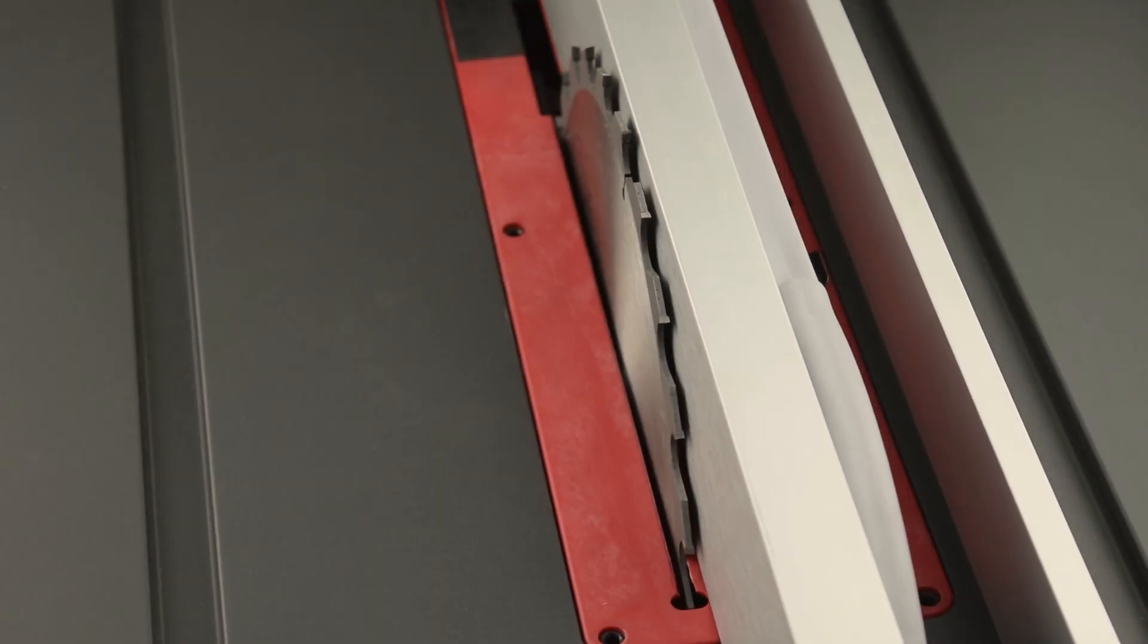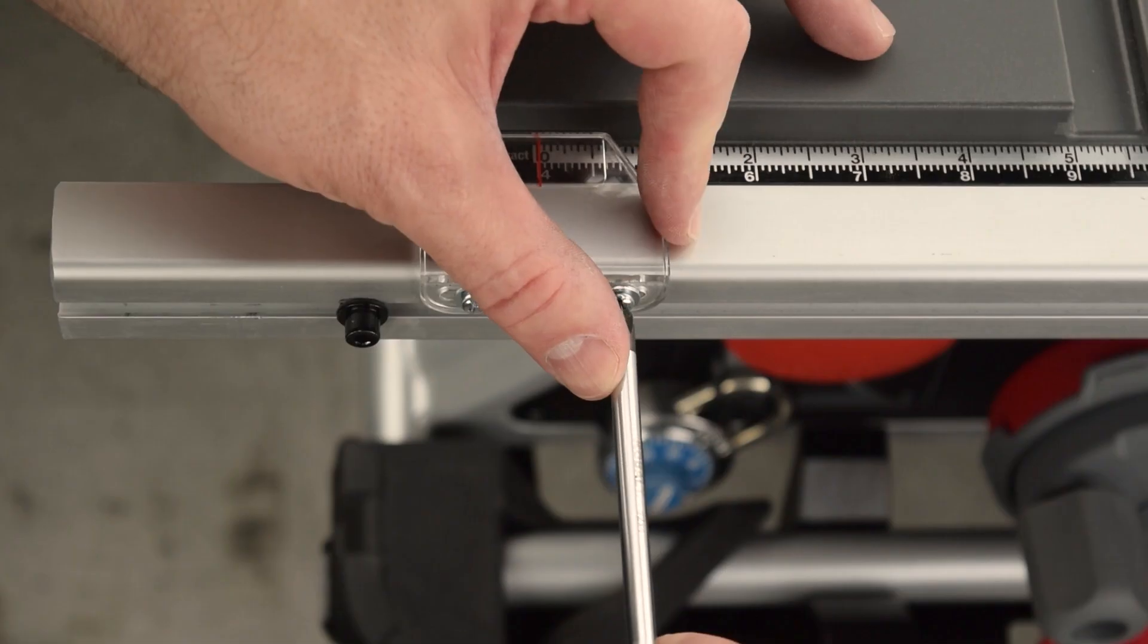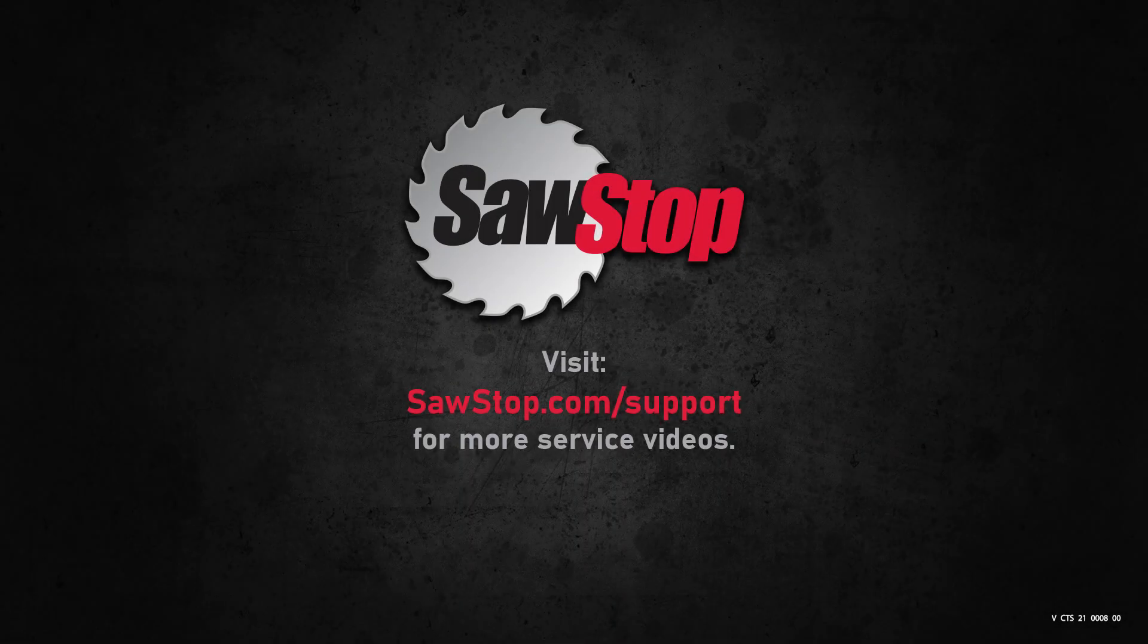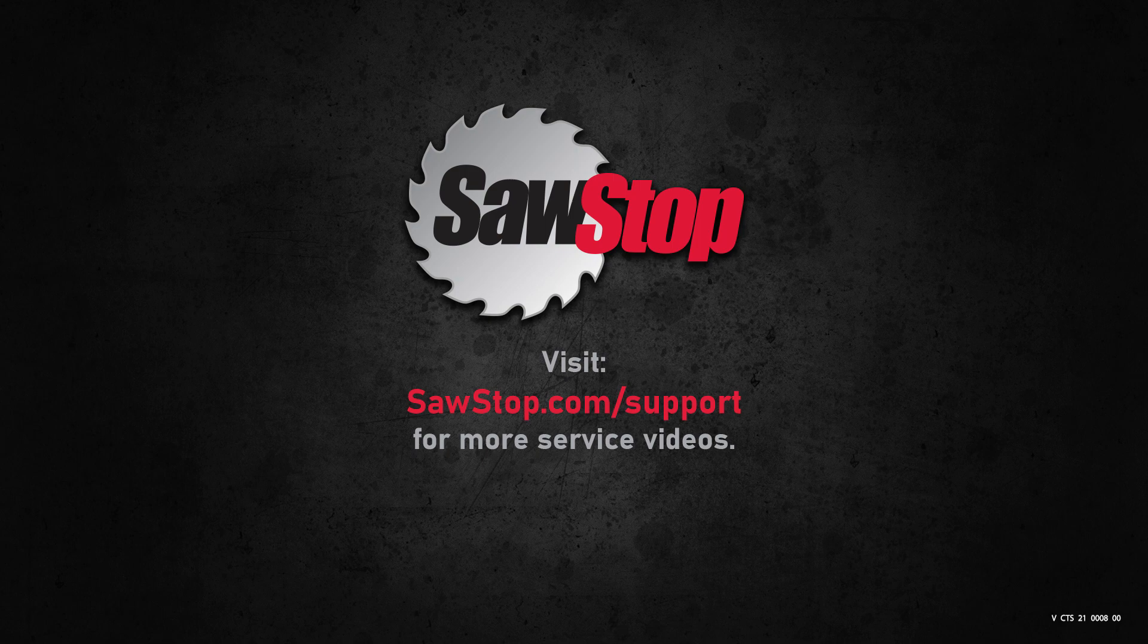That's it. You have learned how to calibrate the position indicator for your SawStop Compact table saw. If you have questions, contact SawStop Service.